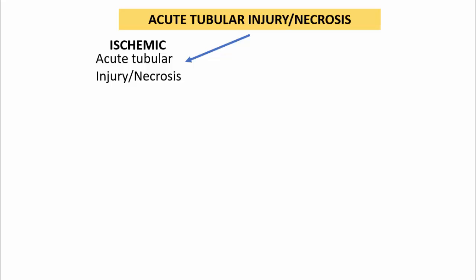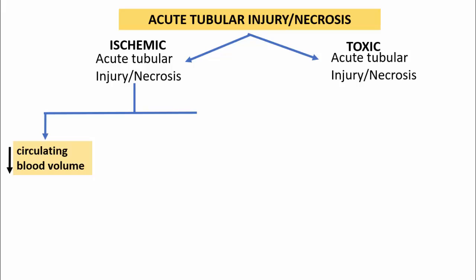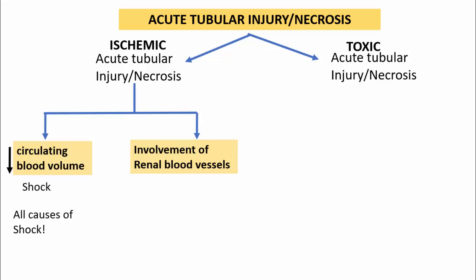Acute tubular injury is further classified based on etiology into two types: ischemic type and toxic type. The causes of ischemic type include decrease in circulating blood volume as in cases of shock — such as massive hemorrhage, severe burns, dehydration, prolonged diarrhea, congestive cardiac failure, or septic shock. Involvement of renal blood vessels can also result in ischemia, in settings such as microscopic polyangitis, hemolytic uremic syndrome, or thrombotic thrombocytopenic purpura — all three can cause diffuse involvement of intrarenal blood vessels, thereby causing ischemia.